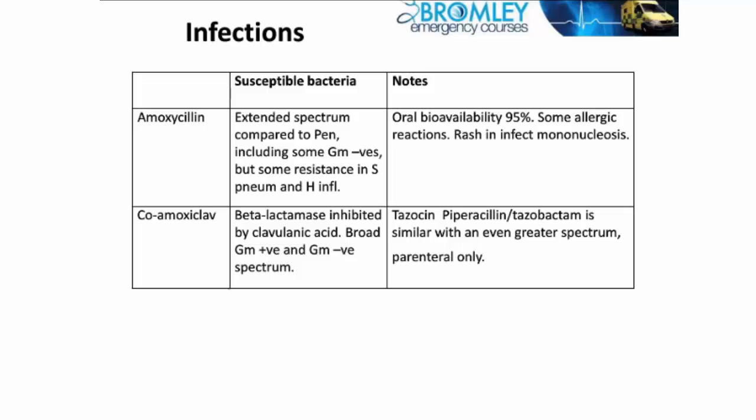Co-amoxiclav is amoxicillin plus a substance called clavulanic acid. Clavulanic acid inhibits beta-lactamase. Many bacteria produce beta-lactamase as a way of being resistant to penicillin — it breaks down part of the penicillin ring. Clavulanic acid inhibits the beta-lactamase so that the penicillin isn't broken down and continues to have its action. That combination is very powerful and gives a much wider, greater effectiveness to co-amoxiclav, and it includes both gram positive and gram negative organisms.